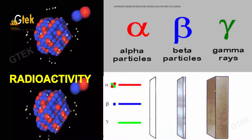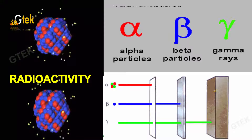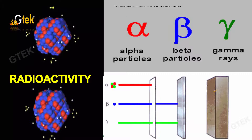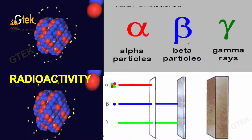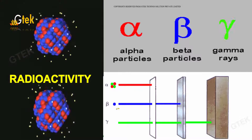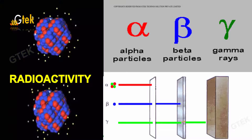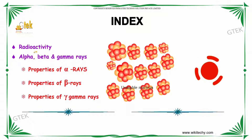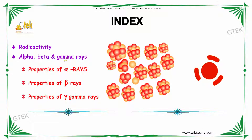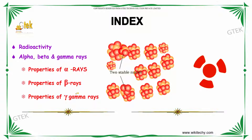Let's talk about radioactivity. This is one of the major areas under this topic. We are going to talk about alpha particles, beta particles, and gamma rays. Here is the index: radioactivity details and alpha, beta, and gamma rays and their properties.